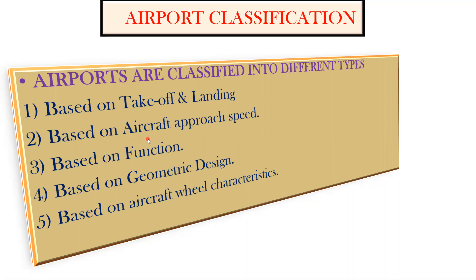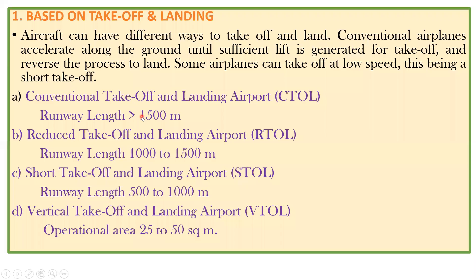We will try to see them one by one. First is based on the takeoff and landing. Based on takeoff and landing, aircraft can have different ways to take off and land. Conventional airplanes accelerate along the ground until sufficient lift is generated for the takeoff and reverse the process for the landing. Some airplanes can take off at a low speed — this being a short takeoff. Further we have four categories here. The first one is the conventional takeoff and landing airport, which you can call CTOL.